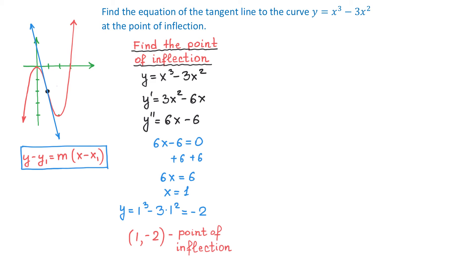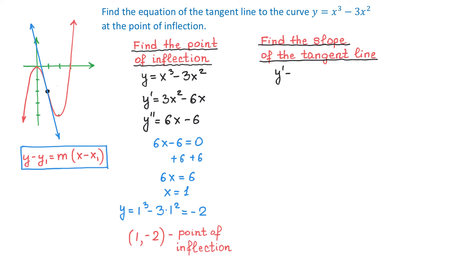In the next step, we will find the slope of the tangent line. The first derivative represents the slope at any point on the graph, so we use y prime equals 3x squared minus 6x. Since the x-coordinate of the point of inflection is 1, we replace each x with 1: y prime equals 3 times 1 squared minus 6 times 1, which equals negative 3. So the slope of the tangent line is negative 3.